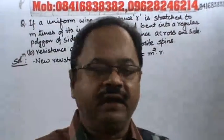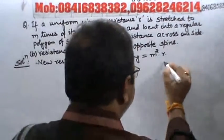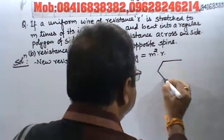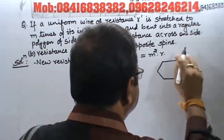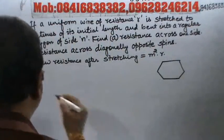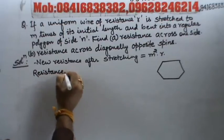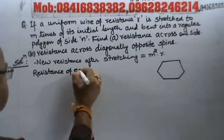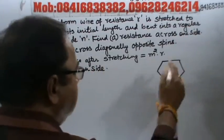Now, it is formed in a polygon of side n. Suppose, this is a polygon of side n. Right? N side here. So, what will be resistance of one side? Resistance of each side.